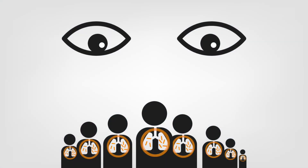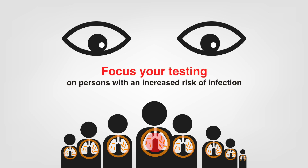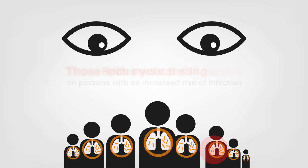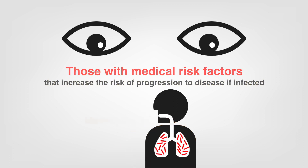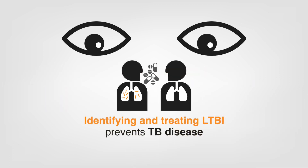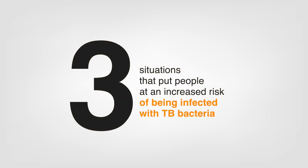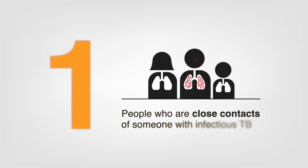Since there is no test that will tell us whom with latent TB infection will progress to active TB, focus your testing on persons with an increased risk of infection and/or those with medical risk factors that increase the risk of progression to disease if infected. Remember, identifying and treating LTBI prevents TB disease. Let's first talk about people at increased risk for acquiring TB infection. First, people who are close contacts of someone with infectious TB — test these individuals for TB infection.